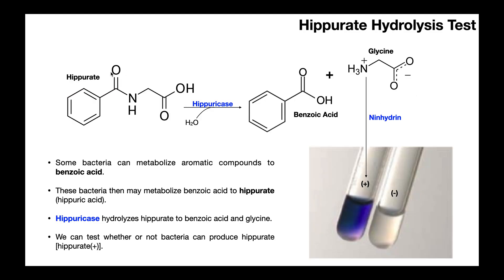This Hippurate molecule can then be broken down by the enzyme Hippuricase. This is a hydrolytic enzyme that uses water to split the bond between the nitrogen atom and the carbon atom. When it hydrolyzes this bond, it gives you benzoic acid and glycine. And that reaction is Hippurate hydrolysis — that's what we're testing for.